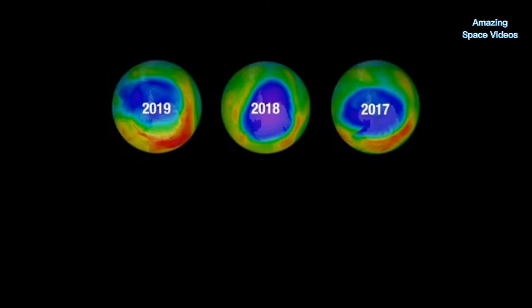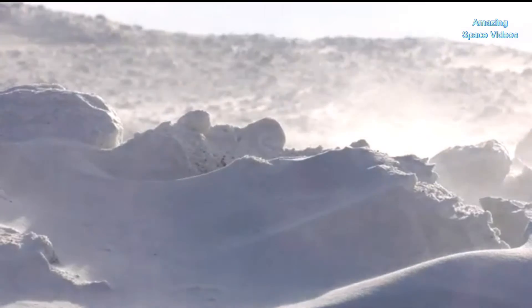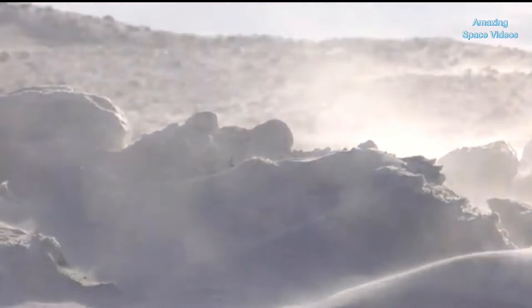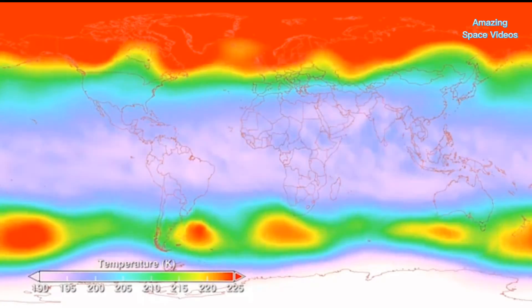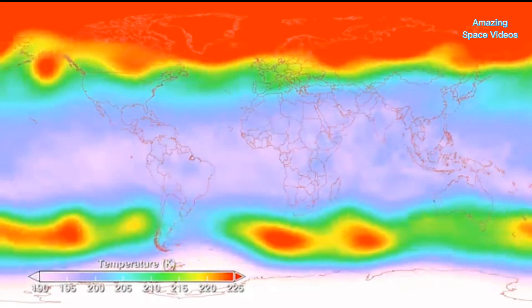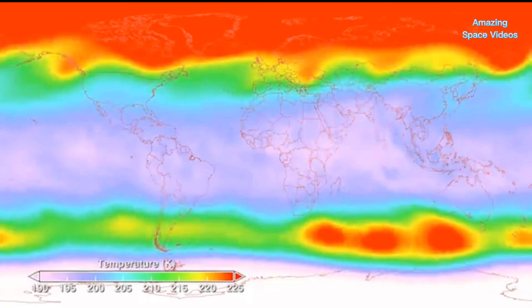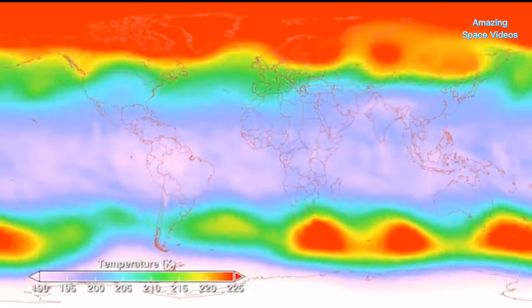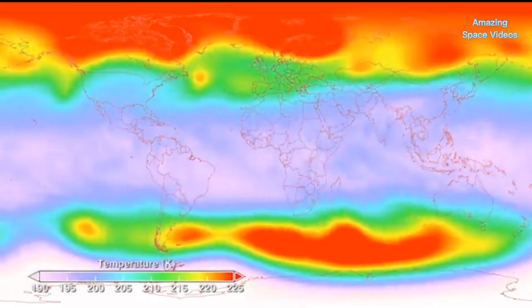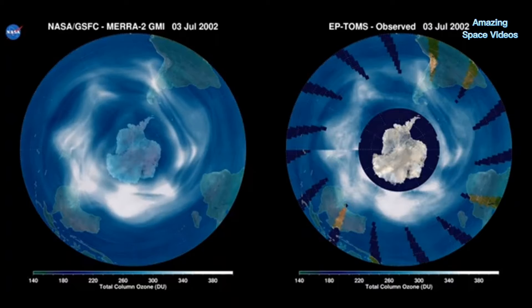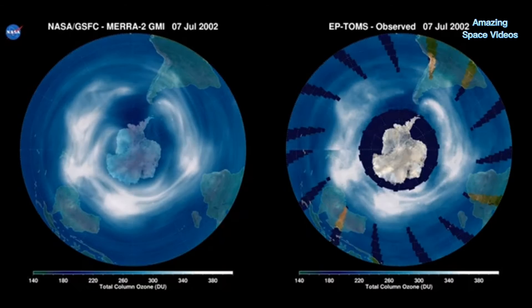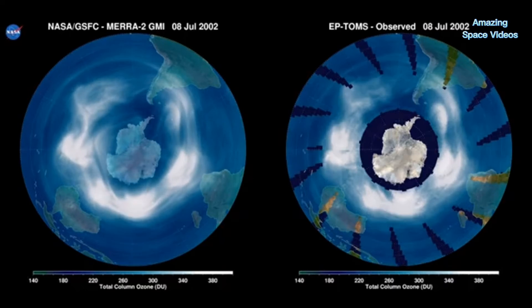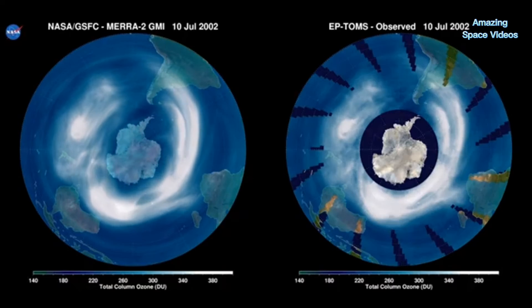So why is the ozone hole bigger and longer lasting in certain years? It all comes down to weather. Just like some winters are colder and longer than others on the earth's surface, the same goes for weather in the stratosphere. If the Antarctic stratosphere stays cold, the polar vortex and the ozone hole within it will persist. In years with cold springtime temperatures, the polar vortex and the ozone hole are large.